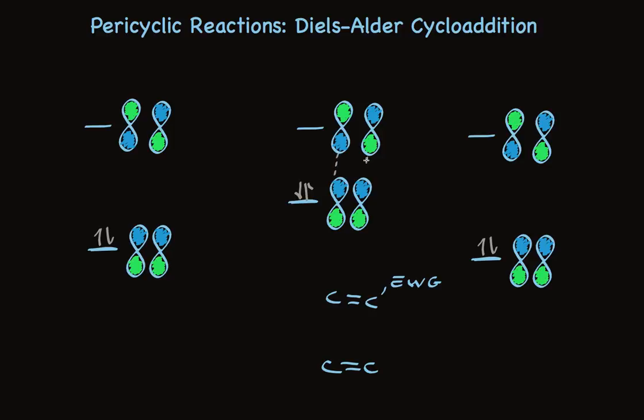And for this reason, this reaction does not occur. In terms of this MO theory analysis, it's called forbidden. So while the four plus two cycloaddition is allowed, the two plus two cycloaddition is forbidden.